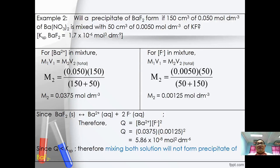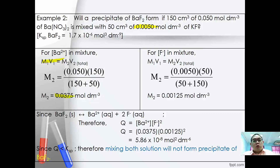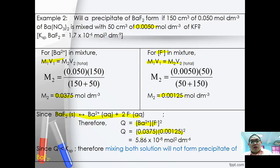Example 2: Will a precipitate of BaF₂ form when 150 cm³ of 0.5 mol dm⁻³ Ba(NO₃)₂ is added to 50 cm³ of 0.05 mol dm⁻³ KF? Using M₁V₁ = M₂V₂: [Ba²⁺] = 0.0375 mol dm⁻³ and [F⁻] = 0.00125 mol dm⁻³. The equation is BaF₂ → Ba²⁺ + 2F⁻, so Q = [Ba²⁺][F⁻]² = 0.0375 × (0.00125)² = 5.86 × 10⁻⁸. Since Q < KSP, no precipitate will form.